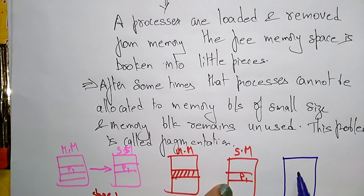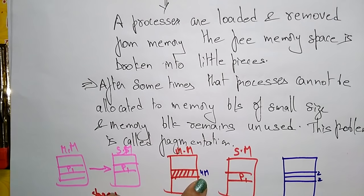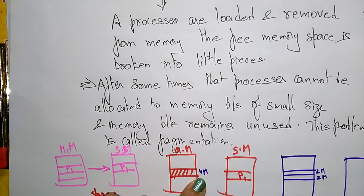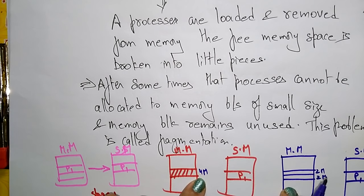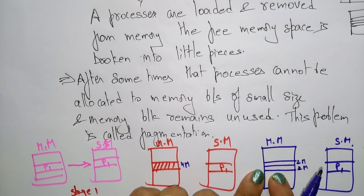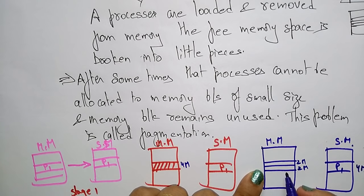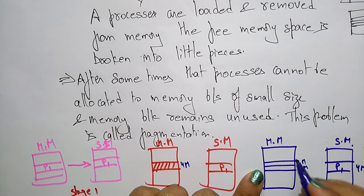This free space becomes broken into smaller pieces whenever data is moved. So this free space, suppose 4 MB, will be divided into 2 MB and 2 MB. After some time, this process wants to come back to main memory — this is the swapping technique. P1 again wants to come back to main memory, but the memory that was there previously has been divided into smaller pieces, so it cannot be allocated to memory because of small size, and the memory block remains unused. Because this is a 4 MB process, it cannot be stored in 2 MB and 2 MB.